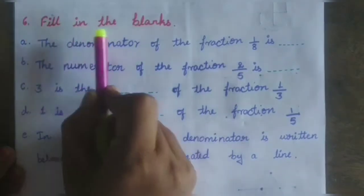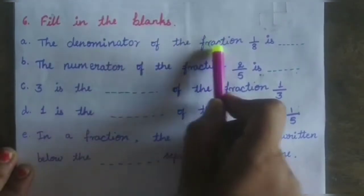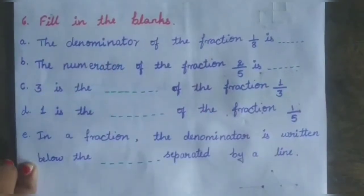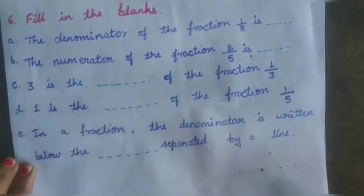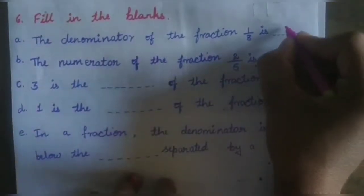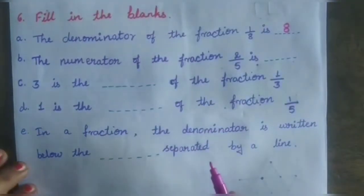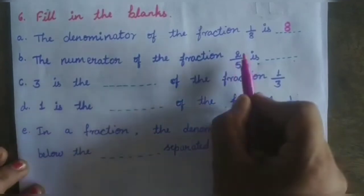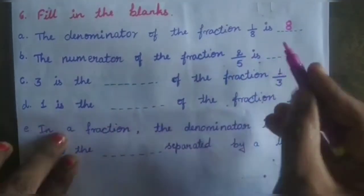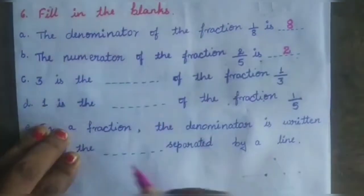Next question: Fill in the blanks. First one — the denominator of the fraction 1 by 8 is? In the fraction 1 by 8, the denominator is 8. Second question — the numerator of the fraction 2 by 5 is? In 2 by 5, the numerator is 2.